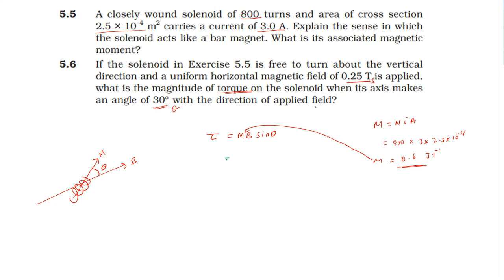Torque equals the magnetic moment 0.6 into magnetic field 0.25 into sin 30 degrees. Sin 30 is 1 by 2, so 0.6 times 0.25 times 0.5 equals 0.075 joules. Therefore, 7.5 into 10 power minus 2 joules is the correct answer for the torque.